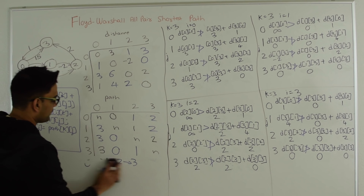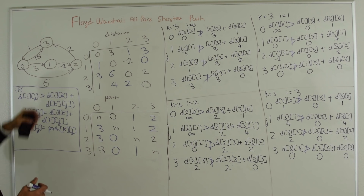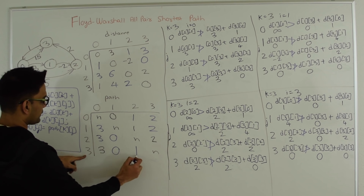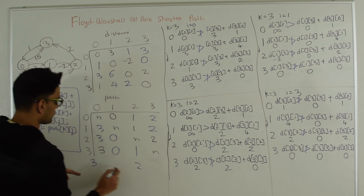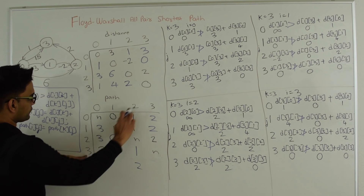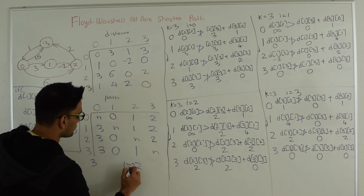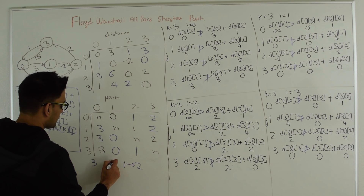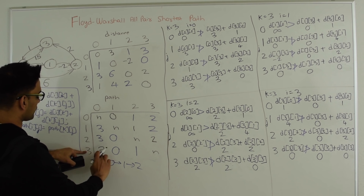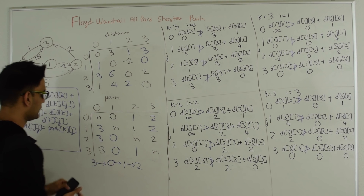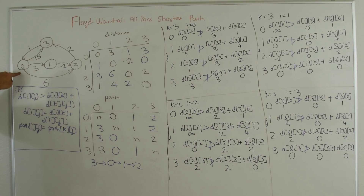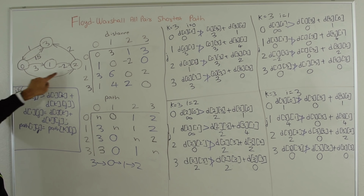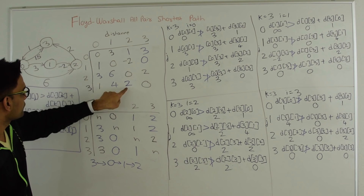Let's reconstruct another example: minimum path from 3 to 2. Go to path[3][2] = 1, so 1 is right before 2. Then path[3][1] = 0, so 0 is right before 1. Then path[3][0] = 3, which is our source. So the path is 3→0→1→2 with distance 1+3+(−2) = 2, which matches d[3][2] = 2.